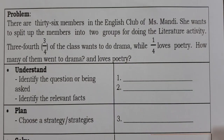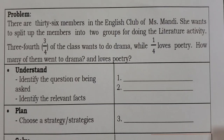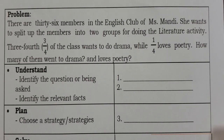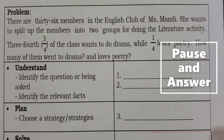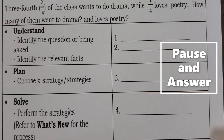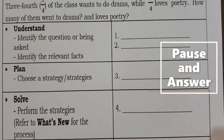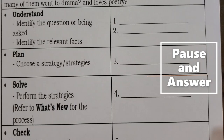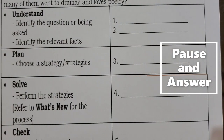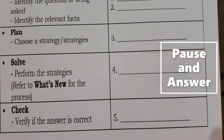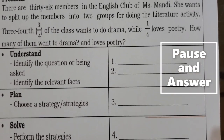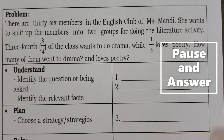Let's try another problem — this time I want you to do it yourself. There are 36 members in the English club of Miss Mandy. She wants to split them into two groups for a literature activity. Three-fourths of the class wants to do drama while one-fourth loves poetry. How many went to drama and how many love poetry? Understand, plan, solve, and check. Pause this video and answer.